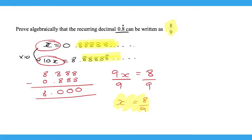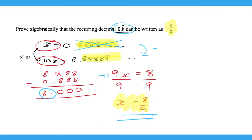Let's go through the steps. All we did was make the recurring decimal equal to x. Then we multiplied by 10 to shift the decimal point so the recurring part lines up — the numbers after the decimal point are the same. So we subtract: 10x subtract x gives 9x, and 9x equals 8. Dividing both sides by 9 gives x = 8/9.